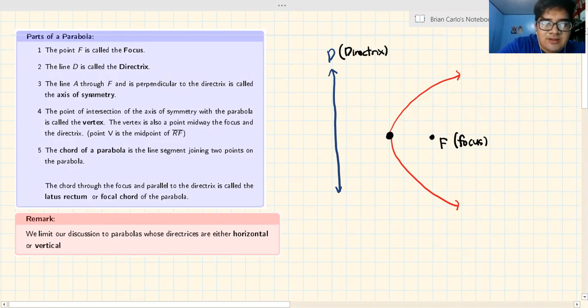A line A through F. Who is F? This is F. That is perpendicular to the directrix is called the axis of symmetry. What does that mean? It passes through F and is perpendicular to the directrix. This is the directrix, this is F. A line passing through F perpendicular to the directrix.